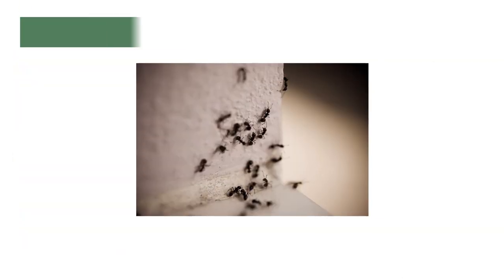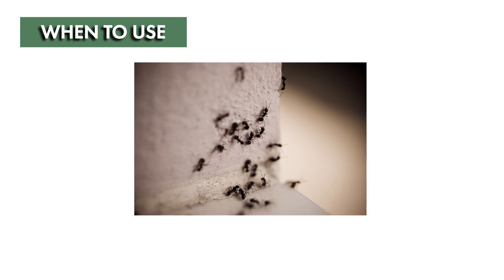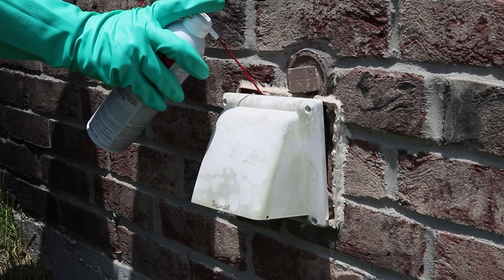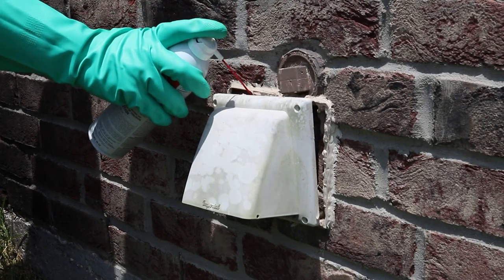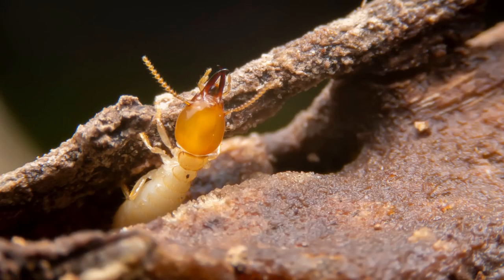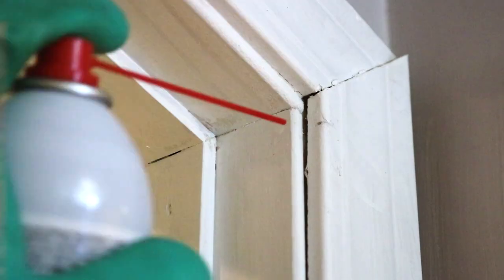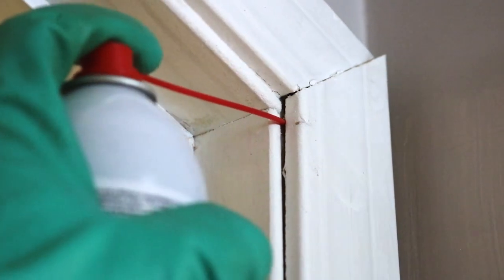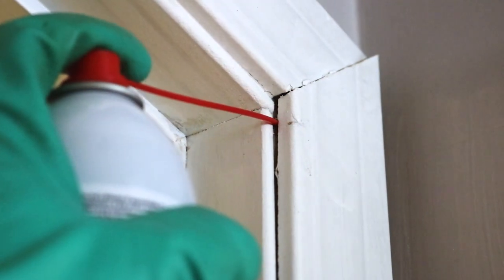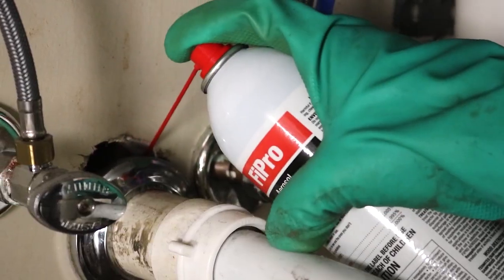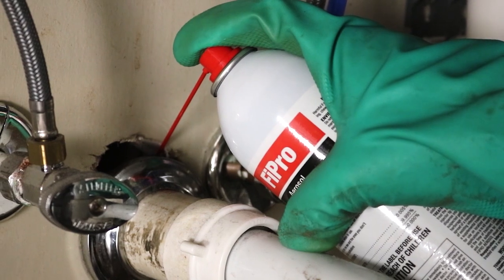Fipro Foaming Aerosol can be used as soon as you notice pest activity. Apply it as a localized treatment to control existing infestations of subterranean termites and other wood-destroying insects, or as a supplemental treatment for structural protection. For preventative control, we recommend you apply Fipro every 30 days for continued protection.